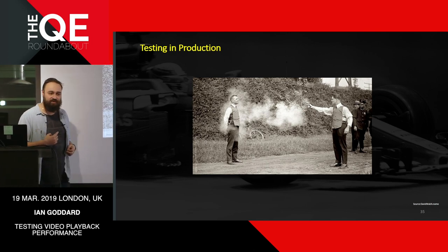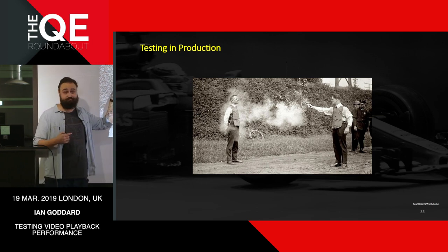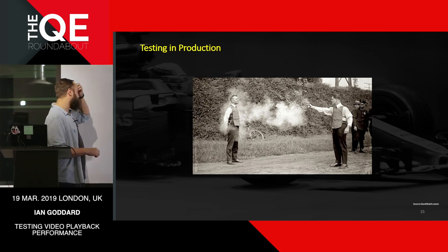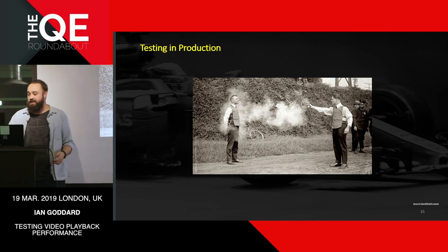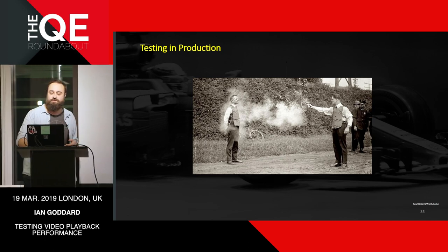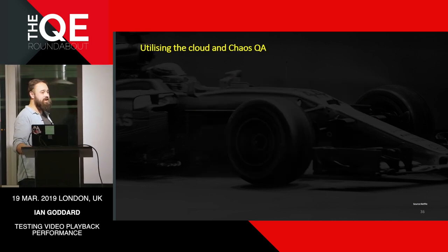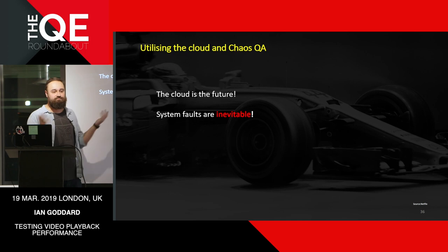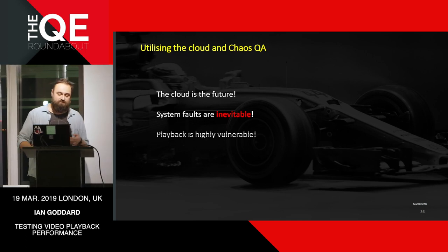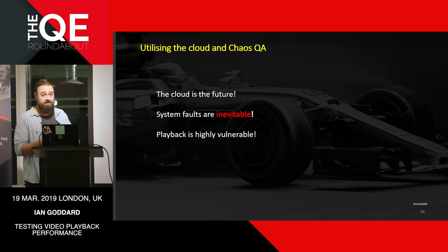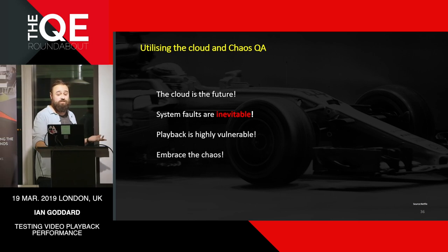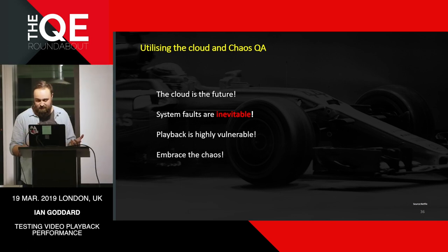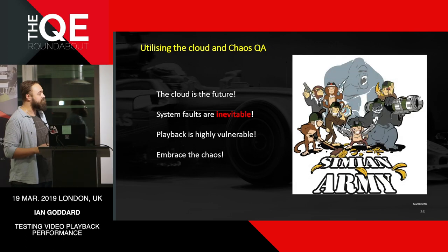This is an actual photo of the very first bulletproof vest being tested — and that man is too happy. I like to think of myself in that situation — I like diving in and being happy about testing in production. One of the ways we can do that now, the big scary future, is to utilise the cloud and chaos QA. Cloud is the future, but system faults are inevitable — you can't control the whole system, and playback is highly vulnerable to that. So you should embrace the chaos.